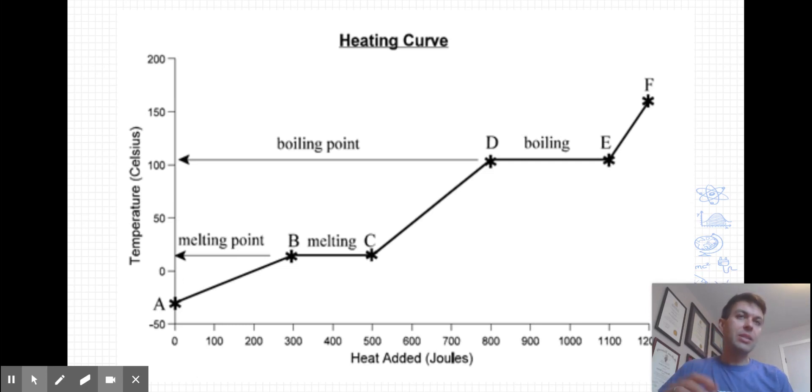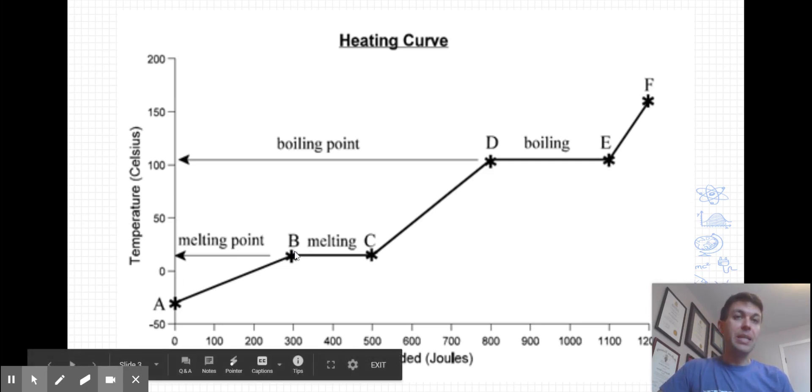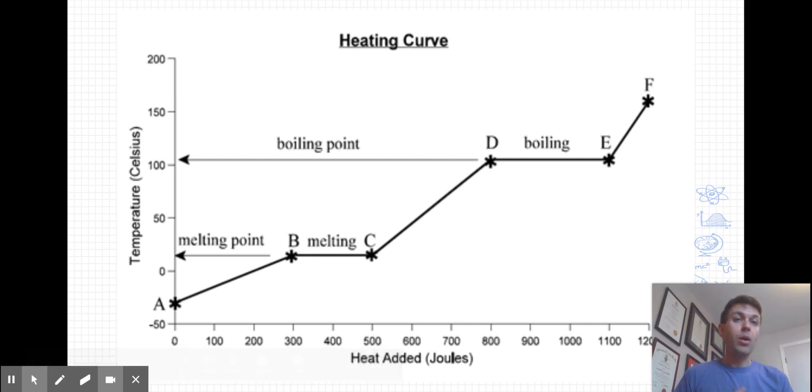Now, something interesting happens here from point B to C during the process of melting. We note that even though the graph is progressing to the right, so we're going from 300 joules to 500 joules, the temperature isn't increasing.